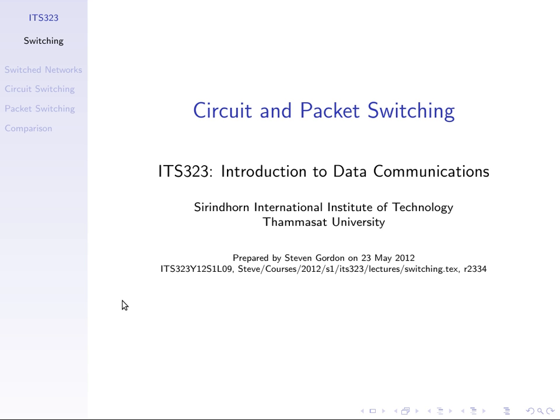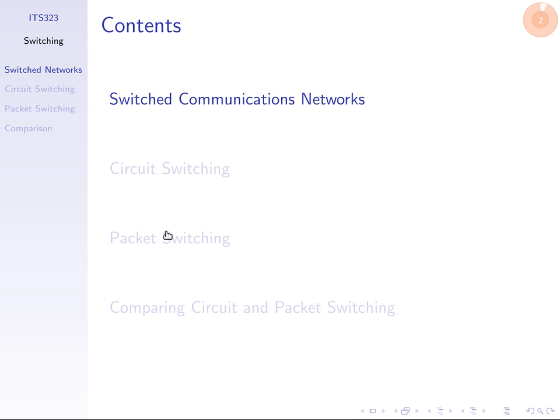We're now going to start to look at networks — computer networks and the technologies behind them. The first part is the general concept of switching. We'll look at what we mean by a switched communication network, then look at different ways to perform switching: circuit switching and packet switching. This topic is reasonably high level — at the end you should understand what we mean by switching, what a communications network is, and the differences between circuit and packet switching.